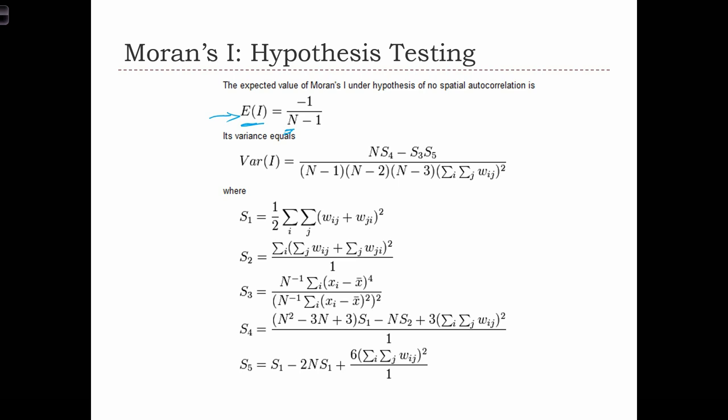So say we only have a sample of 5 points. In that case, a Moran's I of minus 1 over 4 is what we expect to see, or minus 0.25. If we only have 5 points, then we expect to see a slightly negative Moran's I, even if the data were random.